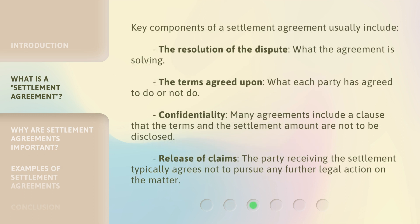Key components of a settlement agreement usually include the resolution of the dispute — what the agreement is solving — the terms agreed upon, and what each party has agreed to do or not do. Confidentiality is also common: many agreements include a clause that the terms and the settlement amount are not to be disclosed. Finally, a release of claims means the party receiving the settlement typically agrees not to pursue any further legal action on the matter.